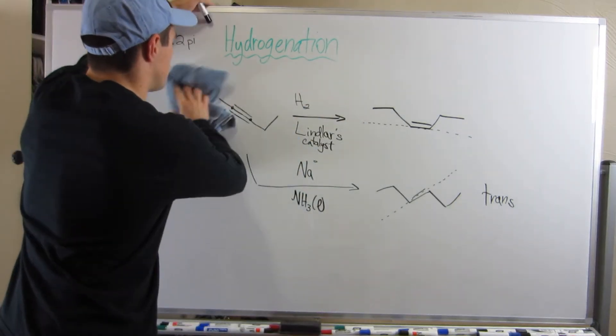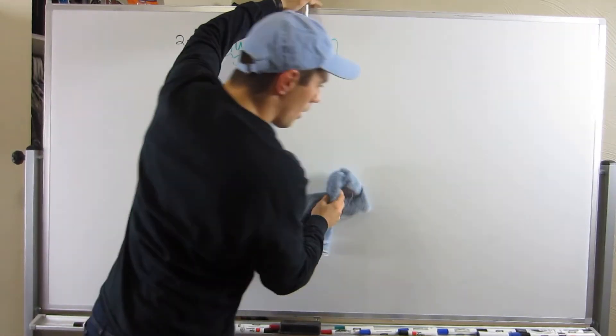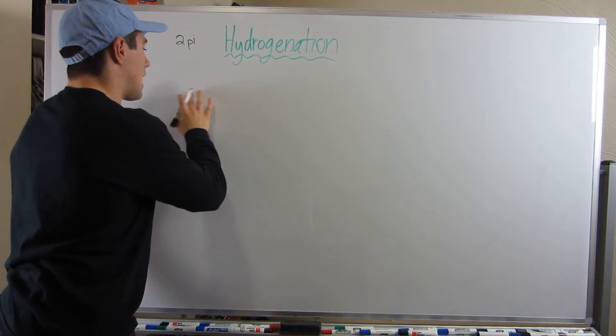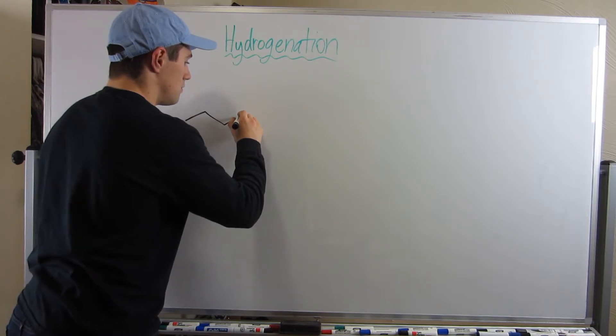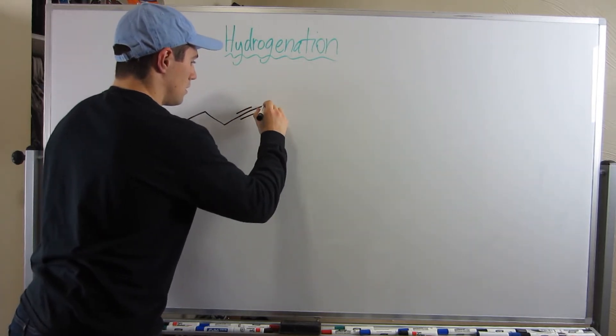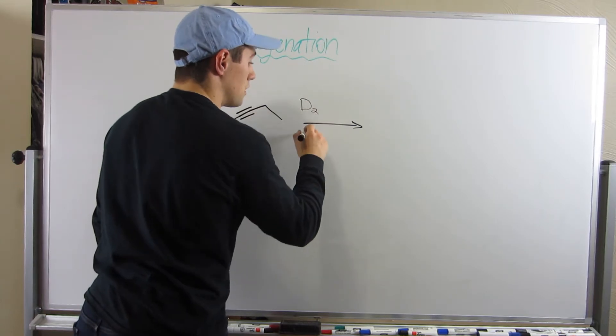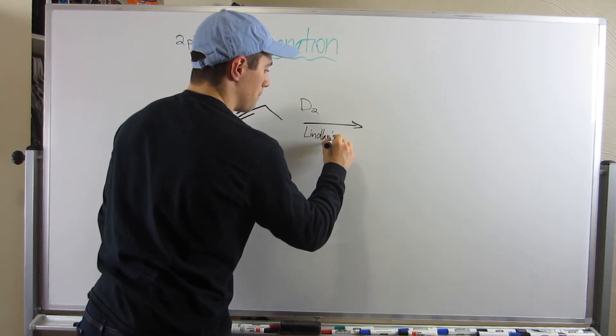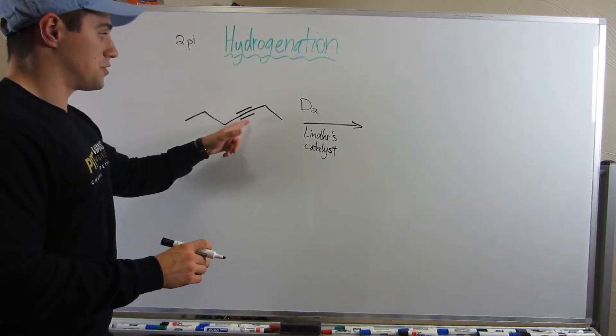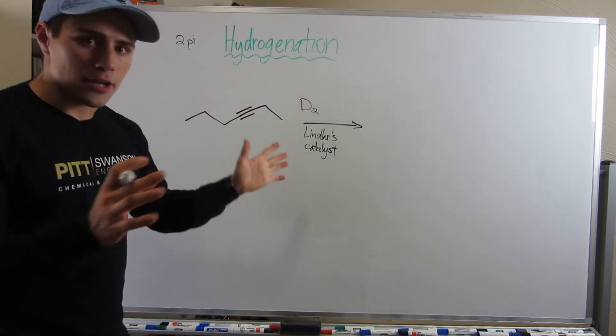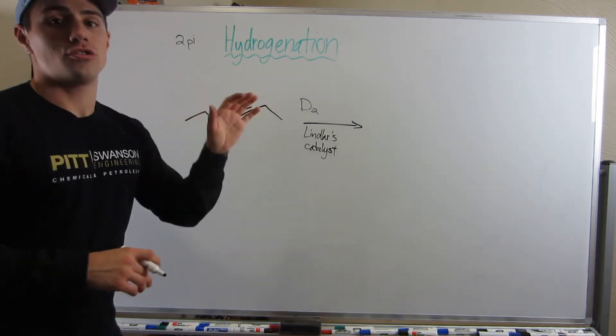So let me point out one thing about the Lindler's reaction. Maybe someone's sneaky on your test and they give you something along the lines of... [draws seven carbon alkyne]. So maybe you see D2 and Lindler's catalyst. So you're not phased because you know exactly what this is. You see the triple bond. You see, this is hydrogen with an extra neutron, and Lindler's catalyst. So you're going to hydrogenate this triple bond to a cis double bond.